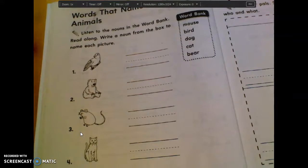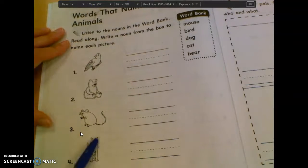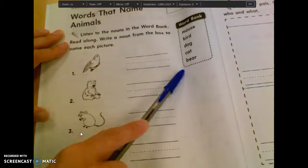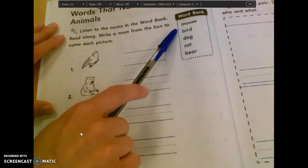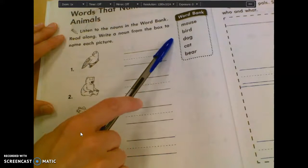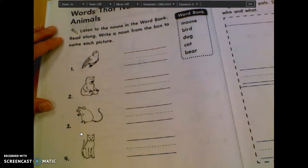So this page is very easy. All you have to do is go through and label these pictures with these words. So your words up here say mouse, bird, dog, cat, bear.